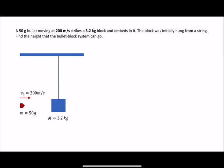As this term suggests, the ballistic pendulum contains two events. So for the first event, a bullet of the mass of 50 gram moving at 200 meter per second strikes a 3.2 kilogram block and embeds in it. So this is an inelastic collision process.